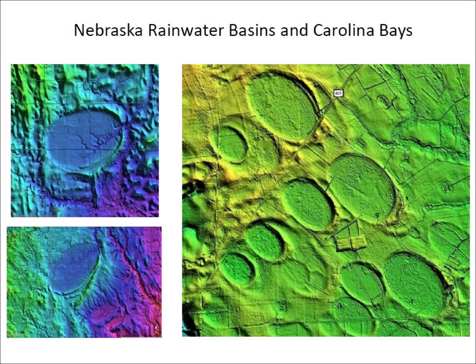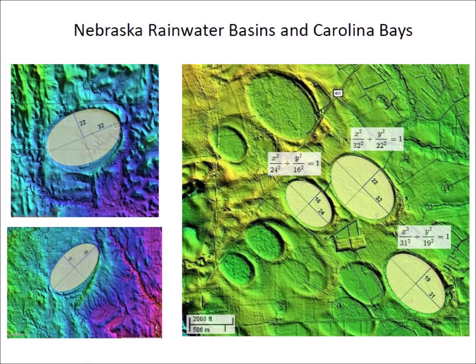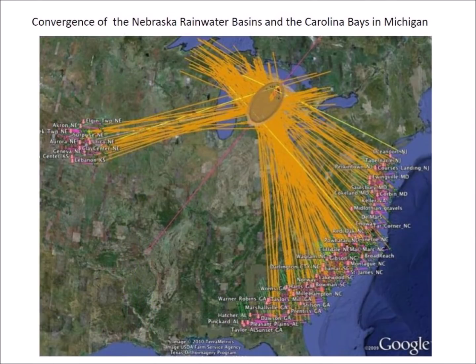The idea of an extraterrestrial impact in the Michigan Peninsula is supported by the existence of the Nebraska Rainwater Basins and the Carolina Bays. These are geological features with perfect elliptical geometry, whose major axes are oriented toward the Great Lakes region. The bays have a width-to-length ratio of approximately 0.58, which corresponds to cones inclined at about 35 degrees and indicates that the bays originated as inclined conical cavities. A study by Michael Davias of the orientations of the Nebraska Rainwater Basins and the Carolina Bays shows a convergence point in Michigan around Saginaw Bay.